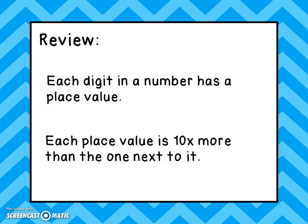We have the ten thousands — that's ten times more than the thousands place. We have the hundred thousands — that's ten times more than the ten thousands place. So that's place value: ones, tens, hundreds, thousands, ten thousands, and hundred thousands.